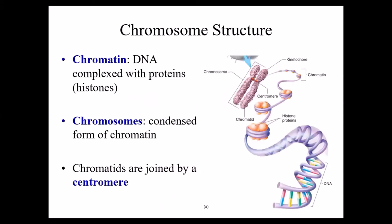Inside the nucleus you'll find DNA. The first vocabulary word is chromatin — basically DNA strands that have been intertwined with proteins, specifically a special type called a histone protein. The diagram shows the double helix of DNA getting wrapped up with histone proteins to make chromatin. Once you condense and tightly pack all of that together, you have something called a chromosome. Each chromosome has two parts called chromatids — two individual parts joined together in the middle by something called a centromere, which holds the two chromatids together.